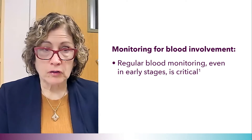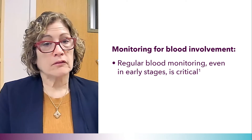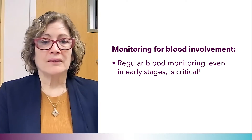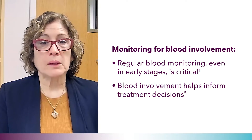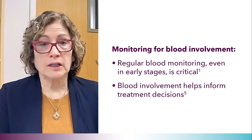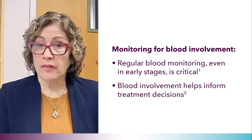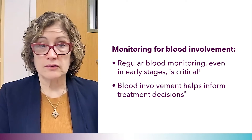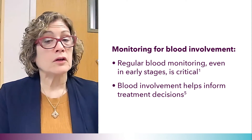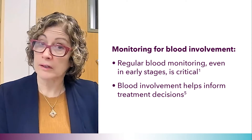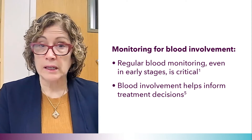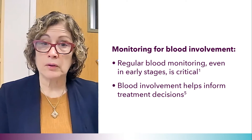Regular blood monitoring, even in early-stage MF, is a critical component of our assessments, as patients with patches and plaques can still have some degree of blood involvement. The blood component of the disease is very important when I think about treatment decisions. If a patient has a significant circulating population, we need to make sure that our therapy of choice is directed to those circulating cells as well as to the skin. This is particularly relevant for earlier-stage patients who might be treated with ultraviolet light therapies or radiation therapy — those therapies are very effective to clear the skin, but they don't really affect the circulating component of the disease.